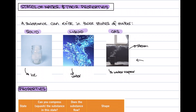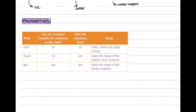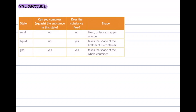We can look at this in more detail when considering the properties of each individual state. The first thing we ask ourselves is: can you compress or squash the substance? If you think about the solid — our ice cube — and you apply a force onto it, it's not going to get any smaller. So we say we can't compress the solid. And exactly the same for a bottle of water — you can't make the particles go any closer to one another, so you cannot compress it.